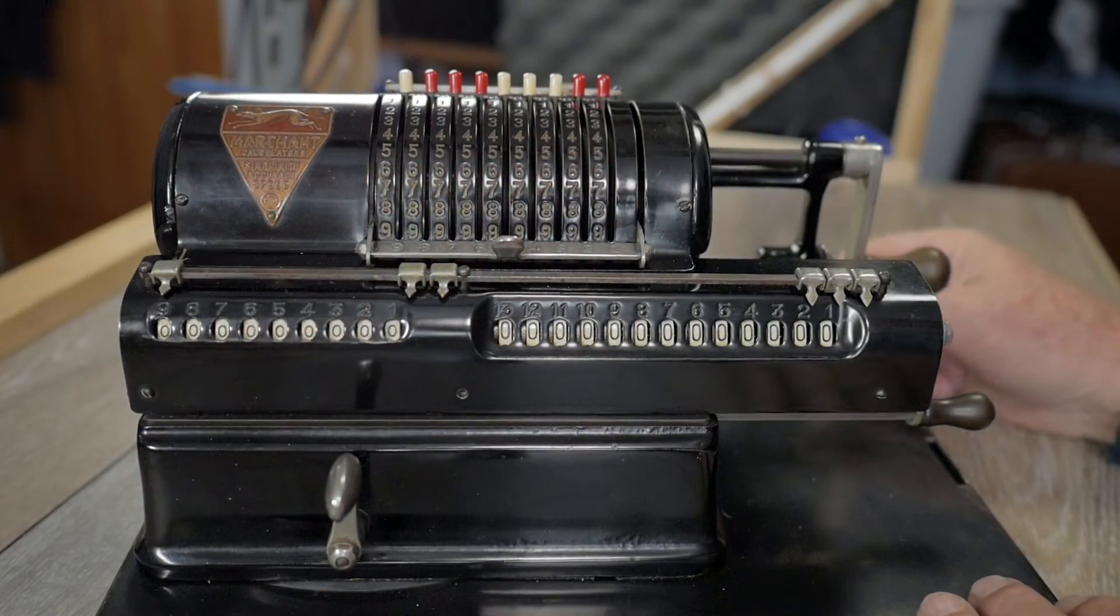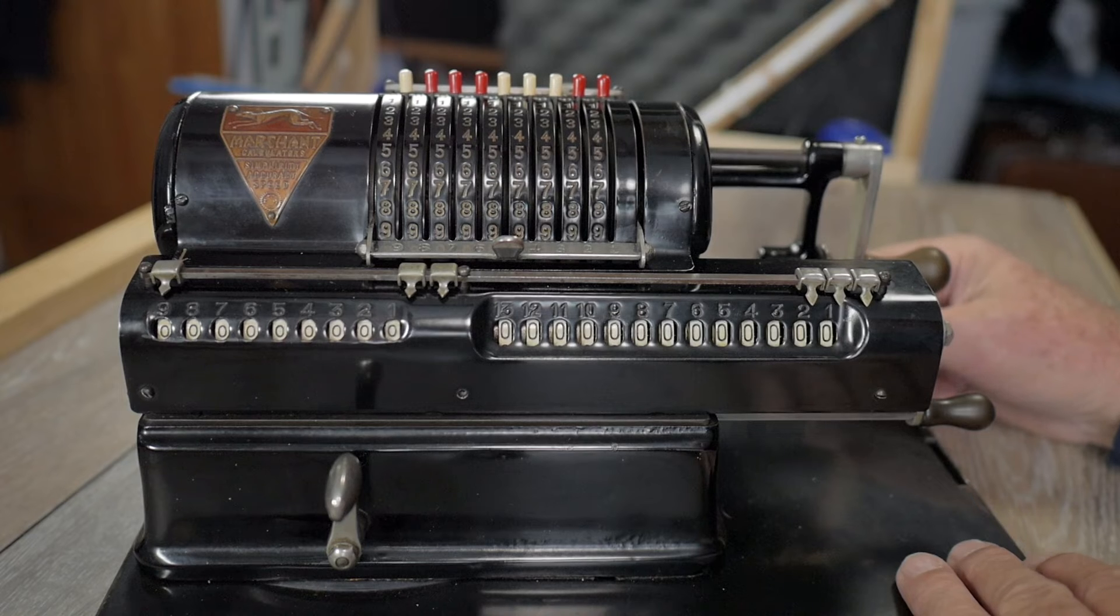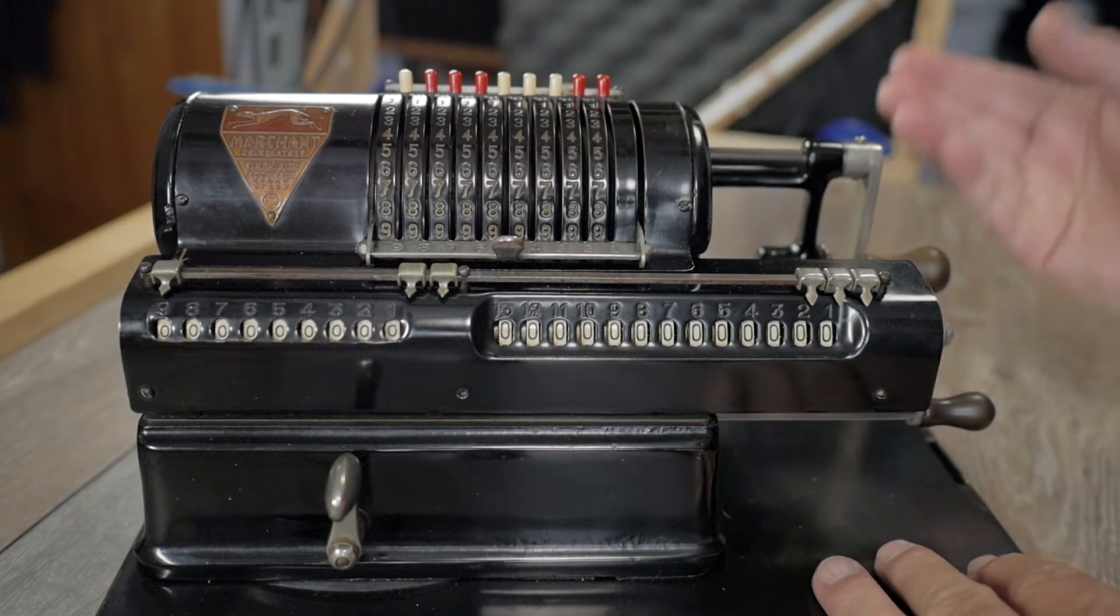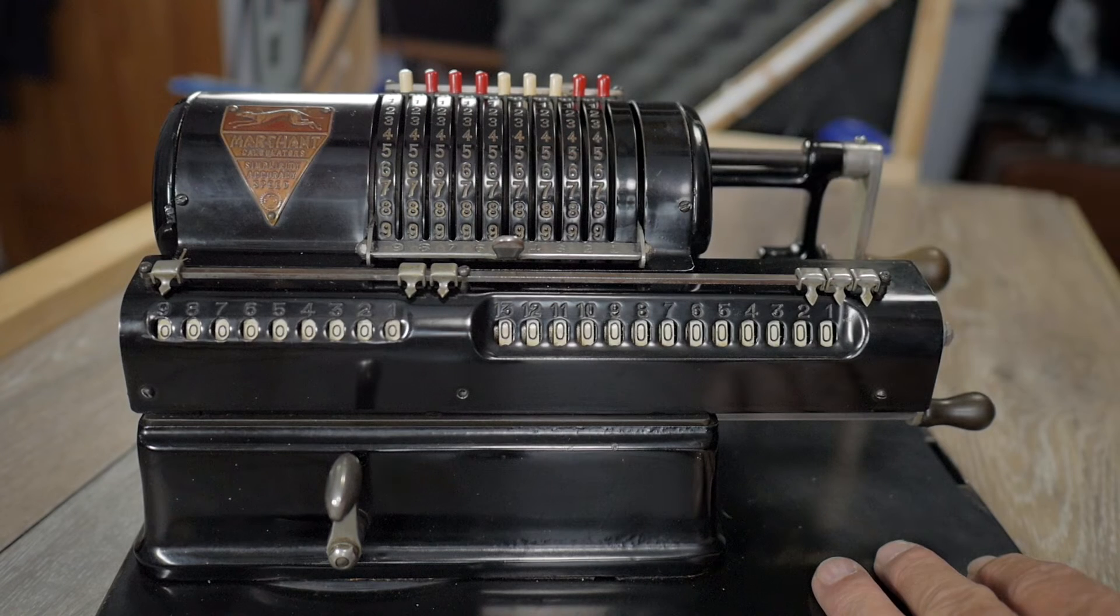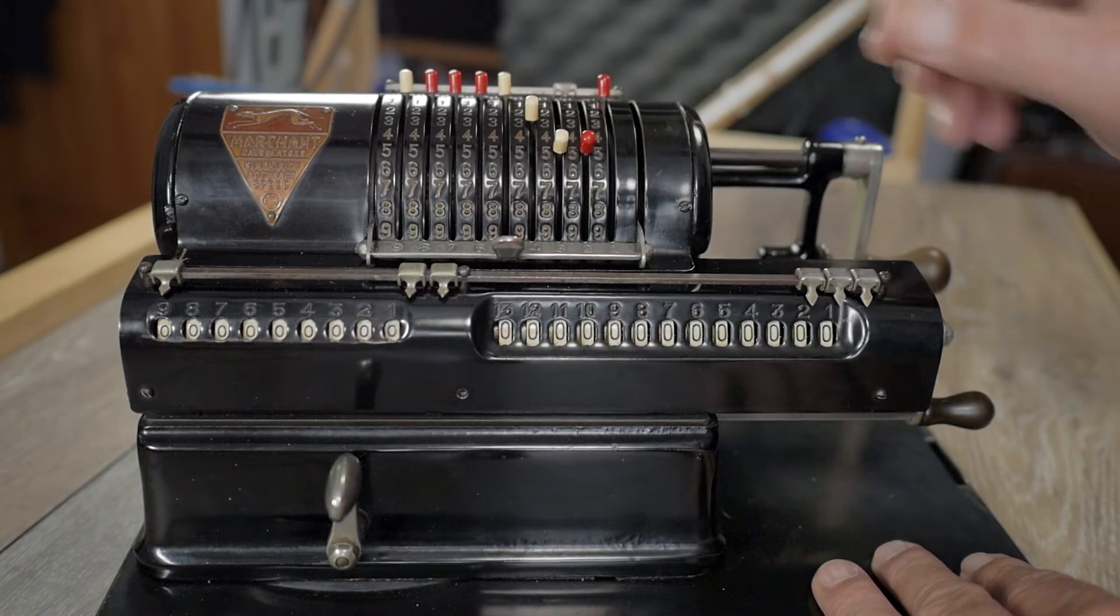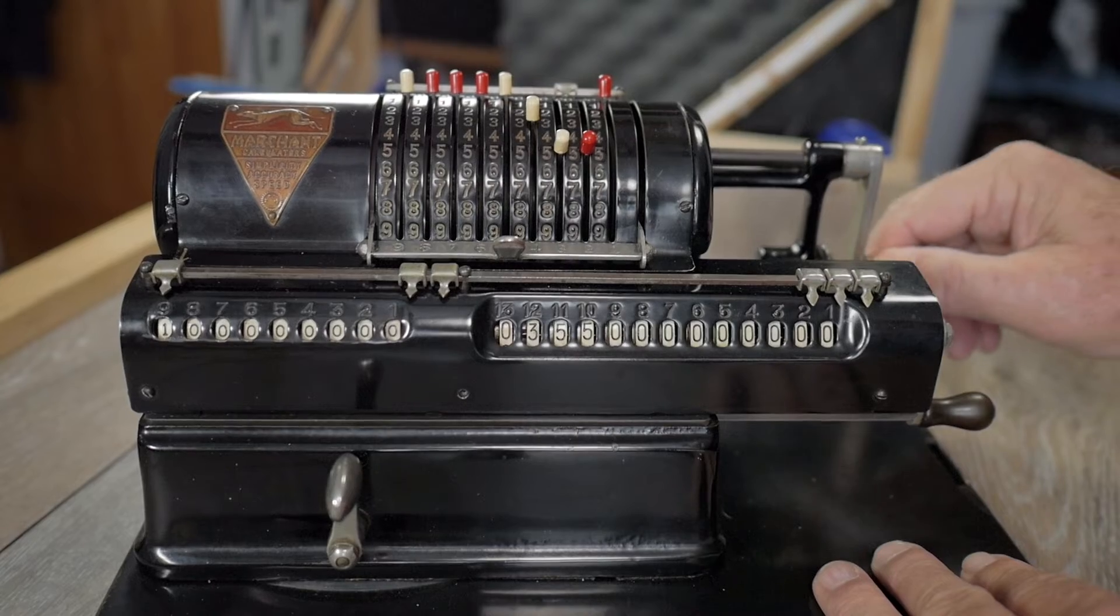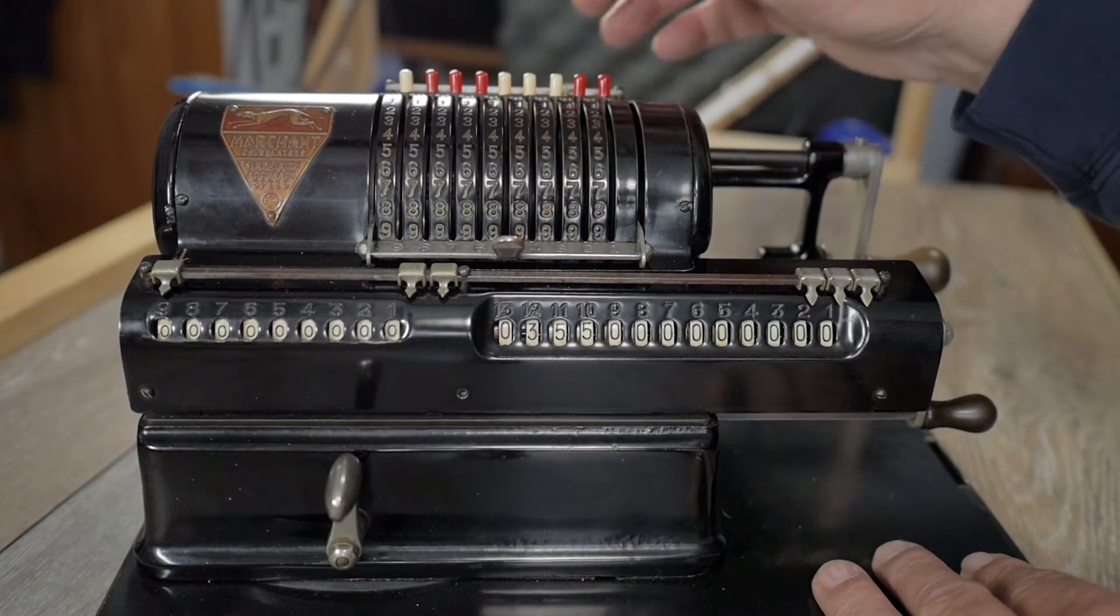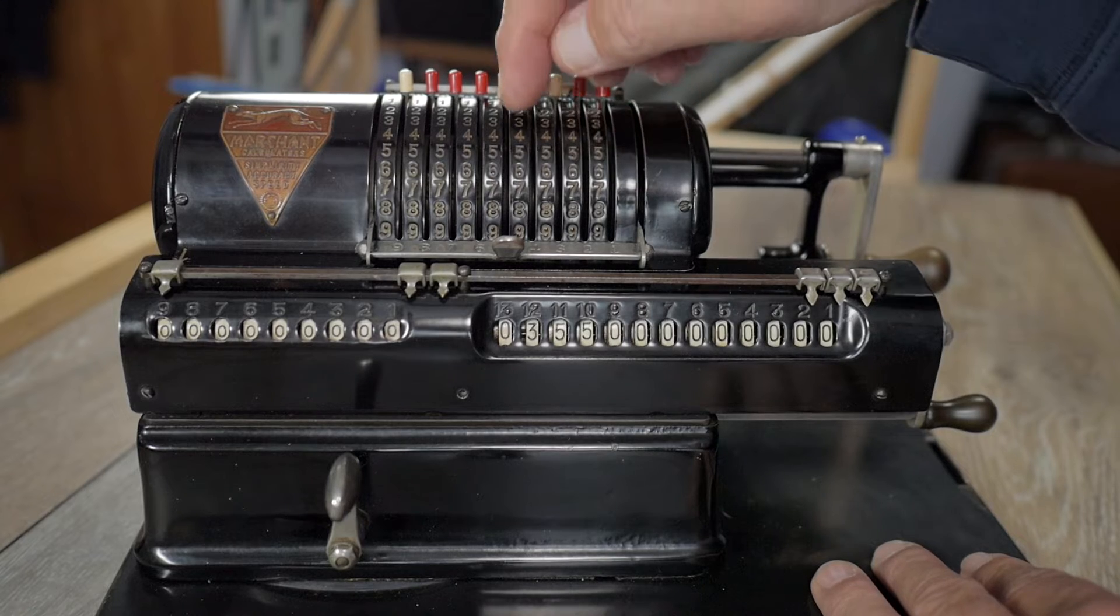Well, it wasn't until I got this Marchant pinwheel calculator that I discovered the alternate method of division that's used on these kind of calculators is actually repetitive subtraction. So let's take an example of 355, for instance. And now I'm going to divide it by 113.